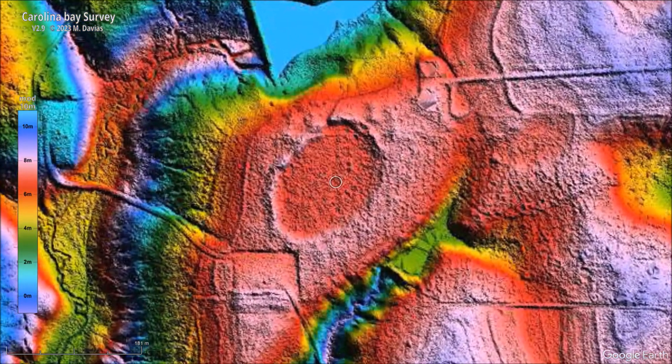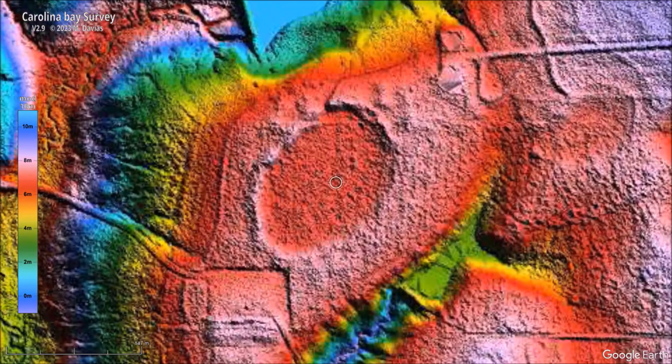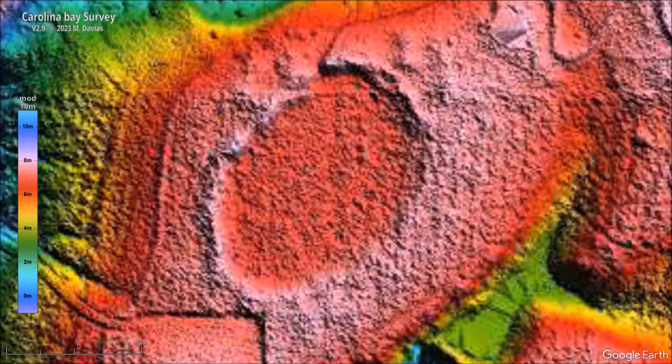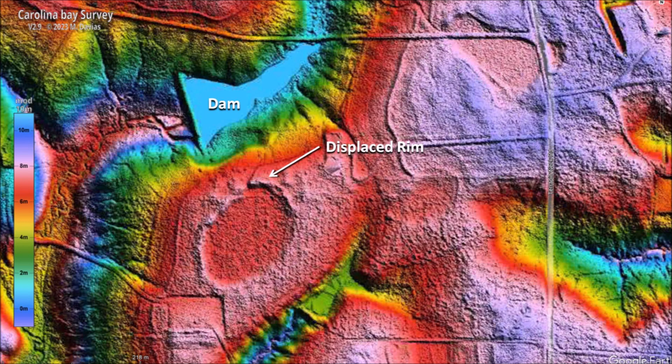The rim on the north side of the bay has been displaced and is precariously at the edge of the hill, almost ready to drop into the dam at the bottom of the hill. The colorized topography indicates that there is a 7-meter drop from the rim to the dam. It is possible that the rim of the bay was destabilized when the dam filled up and a landslide toward the dam undermined the support of the bay rim.